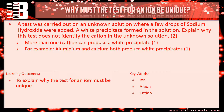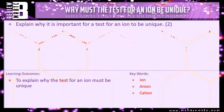As I said, there are lots of different ways they can ask you this question, but it all comes down to the same thing: the test must be unique, otherwise you don't know what ion is present — you can't be certain. So that brings me on to the review question: explain why it is important for a test for an ion to be unique. And that brings this video to an end.